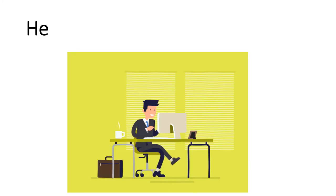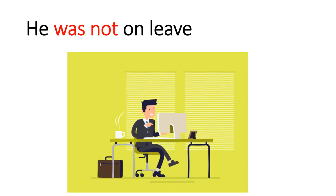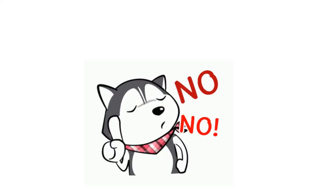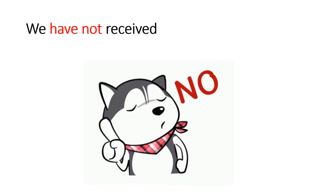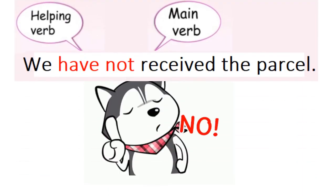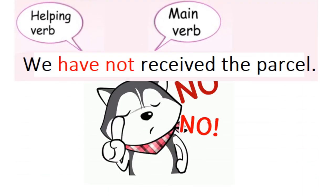Next example: He was not on leave — वो छुट्टी पे नहीं था. इसमें 'was' helping verb का काम कर रहा है. अगला: We have not received the parcel — हमने parcel receive नहीं किया. 'Received' main verb है, 'have' helping verb है, और 'not' इसको negative बनाता है.